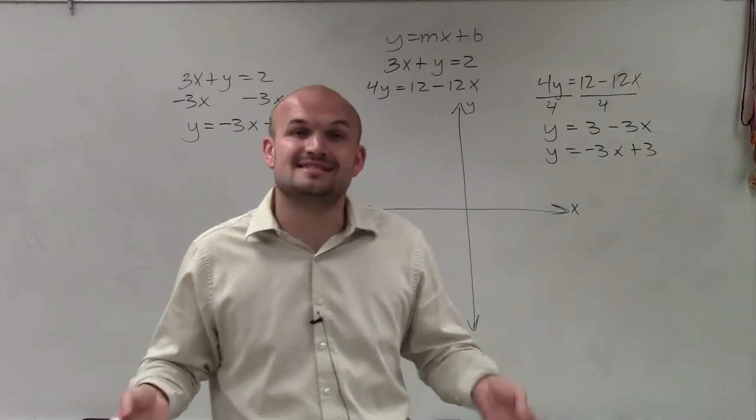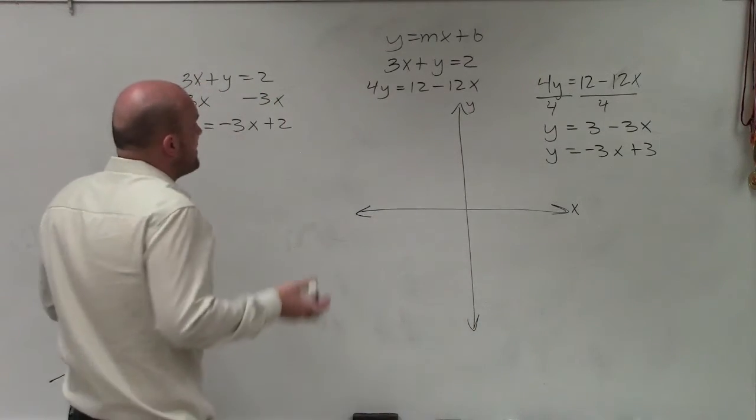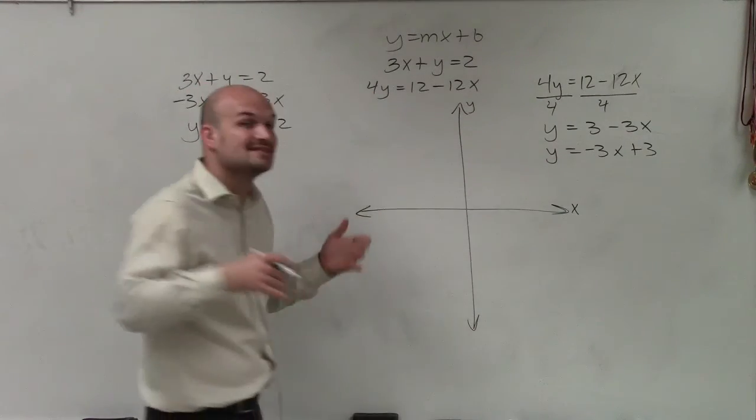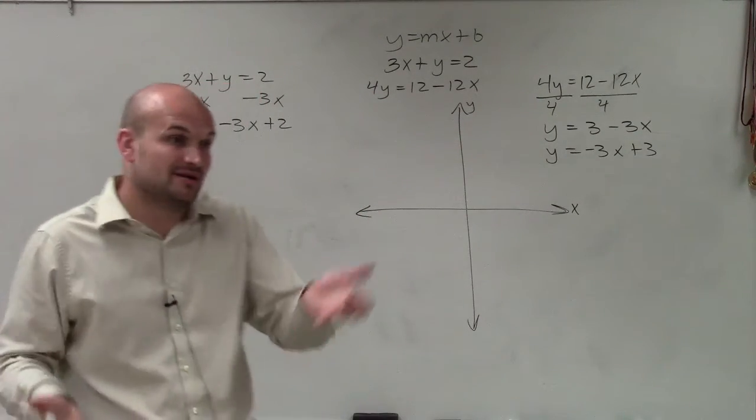Therefore, I have an inconsistent system, meaning I'm not going to have lines that intersect because when they have the same slope, these are parallel lines, right? Parallel lines never intersect.